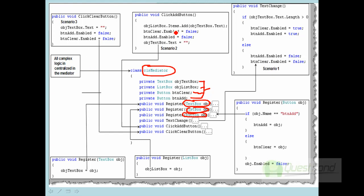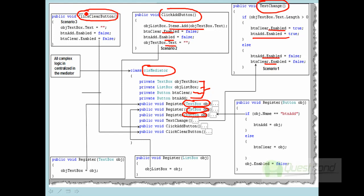Looking at the scenarios: in the first scenario, if a text change event happens, the mediator will enable both objects to true. If there is nothing in the text box, it disables them to false. In the second scenario, if the add button click happens, it adds the value to the list box and disables and clears the buttons and text box. If the clear button click event happens, it performs the corresponding actions. All these scenarios are now being placed inside the mediator class.